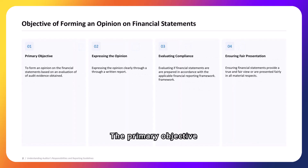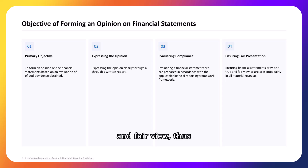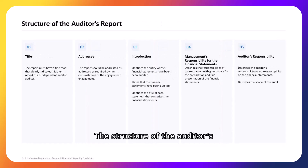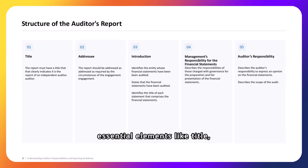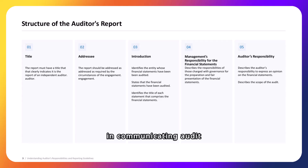The primary objective of forming an opinion on financial statements is to ensure they present a true and fair view, thus providing stakeholders with reliable financial information. The structure of the auditor's report, including essential elements like title, addressee, and responsibilities, ensures clarity and comprehensiveness in communicating audit findings to stakeholders.